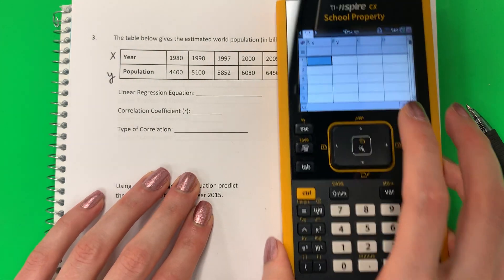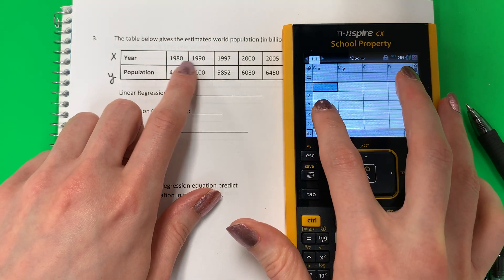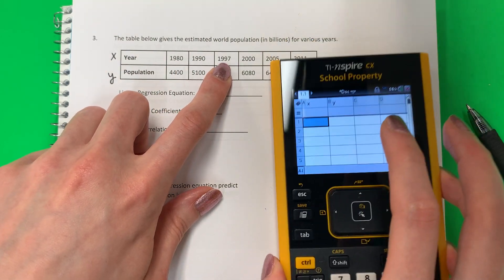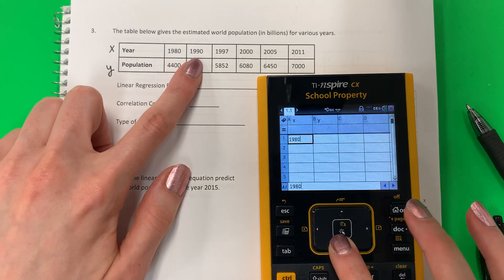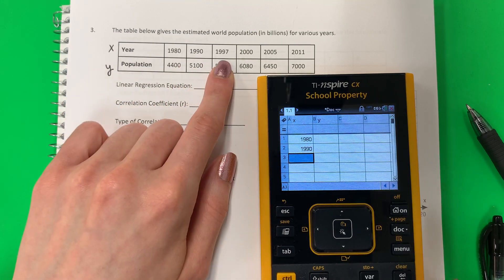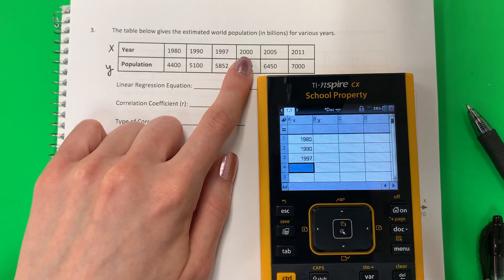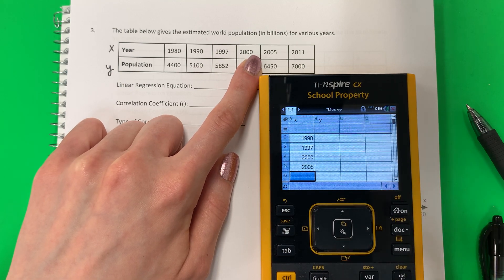Let's put our 1. So 1980, 1990, 1997. So let's go ahead and do that. 1980, 1990, 1997, 2000, 2005, 2011.